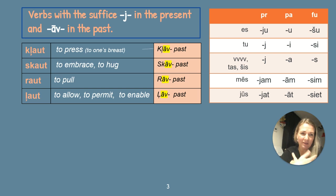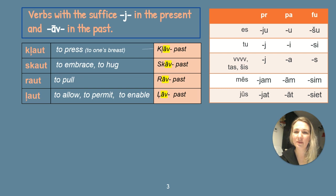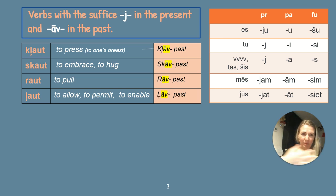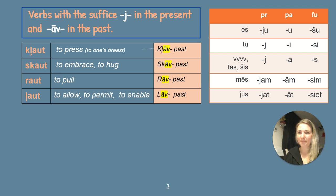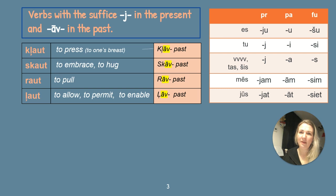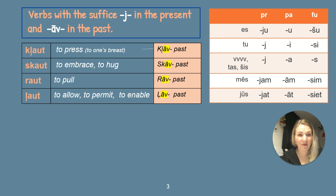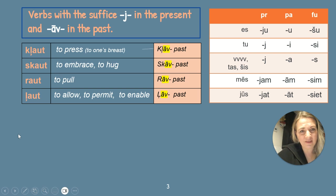Skaut is to hug — you hug someone, and the reflexive form means that both of you hug each other. And raut is to pull. And laut is to allow, to permit, to enable. For example, if you use a computer in Latvian language, you could say atļaut — to enable — using the prefix at-.